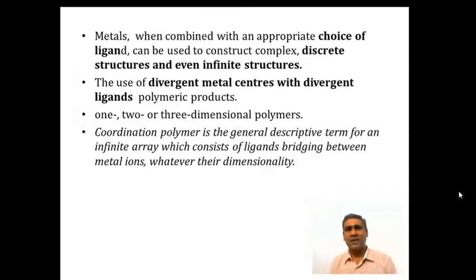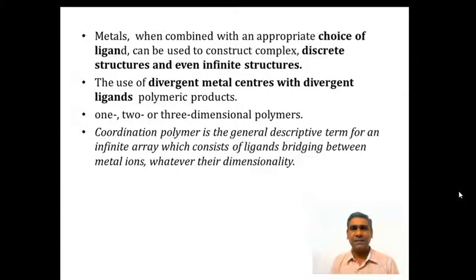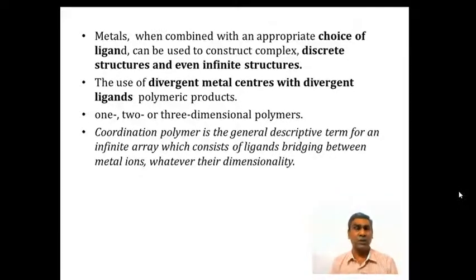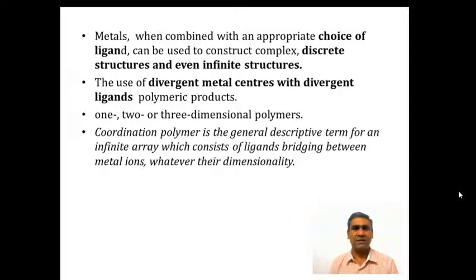Generally with a bidentate ligand and a metal cation with a valency of two, they extend to form a polymeric material. So they can give one-, two- or three-dimensional polymers.